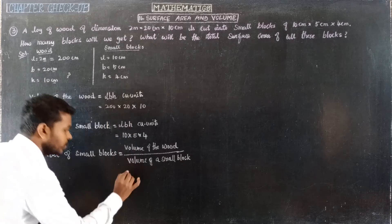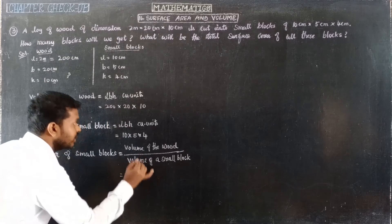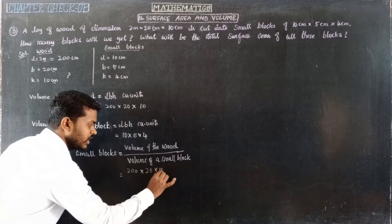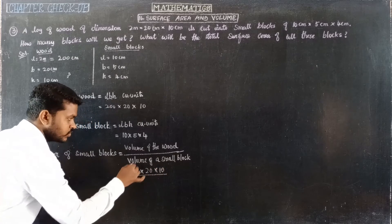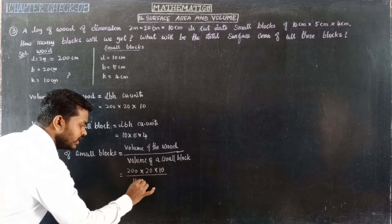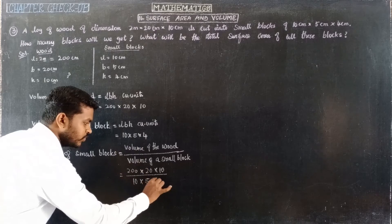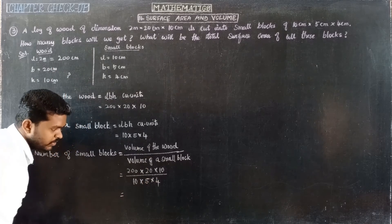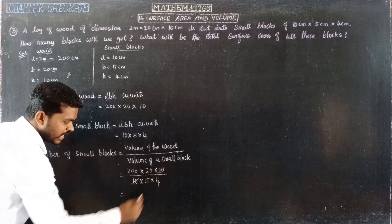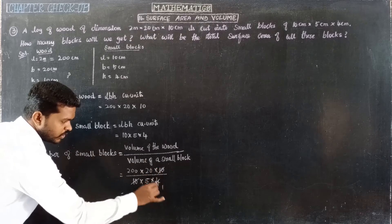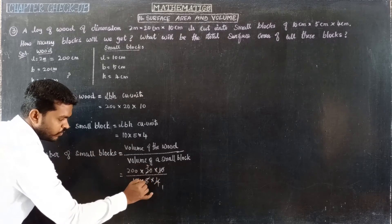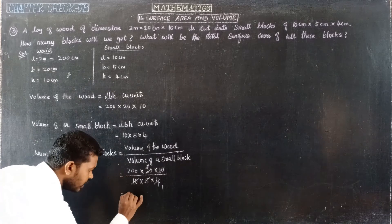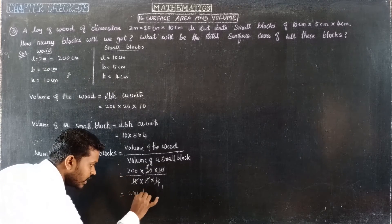The total volume of the wood is 200 × 20 × 10, and one small block is 10 × 5 × 4. Cancelling common factors: 10 and 10 cancel, giving 200 divided by 20. The result is 200 blocks total.